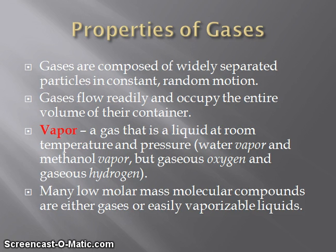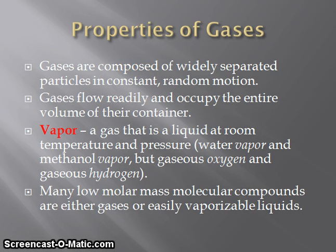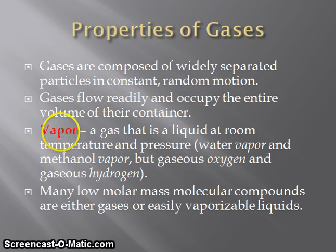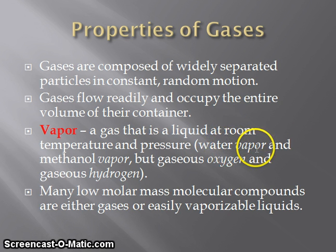Gases are composed of widely separated particles which are in constant random motion. They can flow readily and will occupy the entire volume of whatever container is holding them. An important vocabulary term is vapor — a substance which is in the gas state that would normally be a liquid at room temperature and pressure. For example, water would normally be a liquid at room temperature and standard pressure, but it can evaporate to form water vapor.